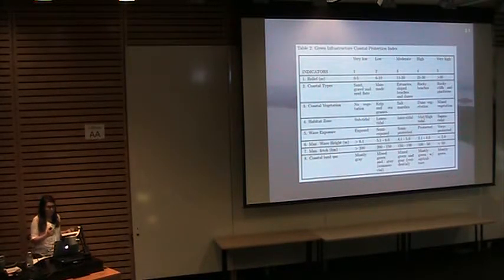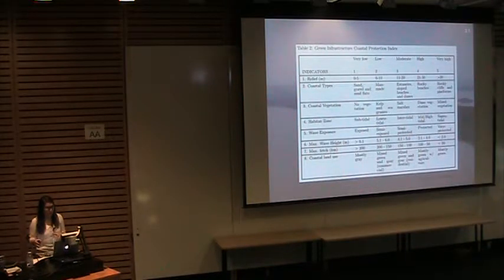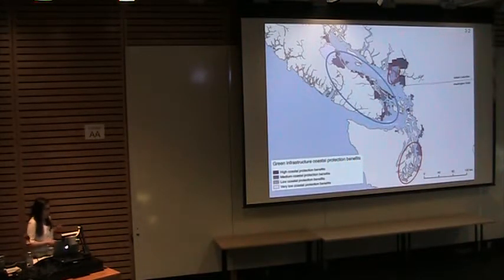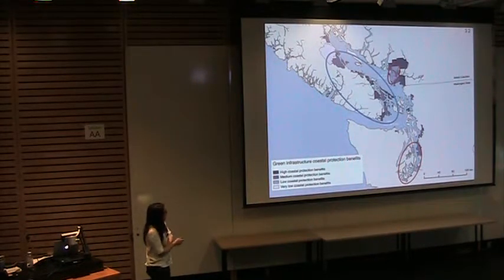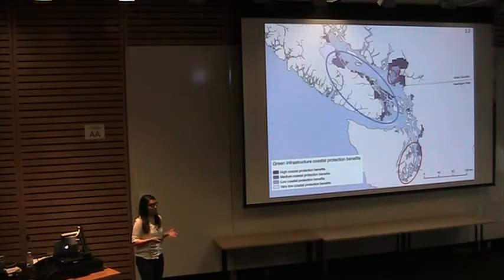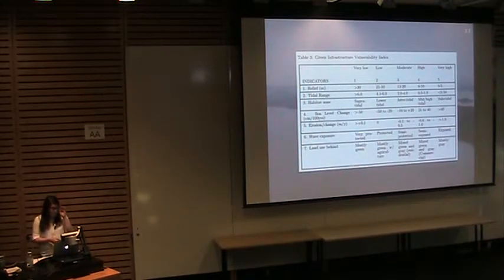This is what the green infrastructure coastal protection index looks like. Based on this classification, green infrastructure's coastal protection benefits would be at the highest where the coastal relief is high, the coastline consists of material providing high roughness, the vegetation at the coastline interacts with wave action, the habitat is located in higher sections of the tidal range, and where the wave exposure, wave height, and wave fetch are low, and land use at coast consists mostly of green uses. When this index was applied to my study area communities, one of the first things to note is the difference between British Columbia and Washington State — green infrastructure in British Columbia tends to have higher coastal protection benefits. However, in high population centers such as Vancouver, Richmond, North Vancouver, and Victoria, the green infrastructure does not appear to have such high coastal protection benefits.